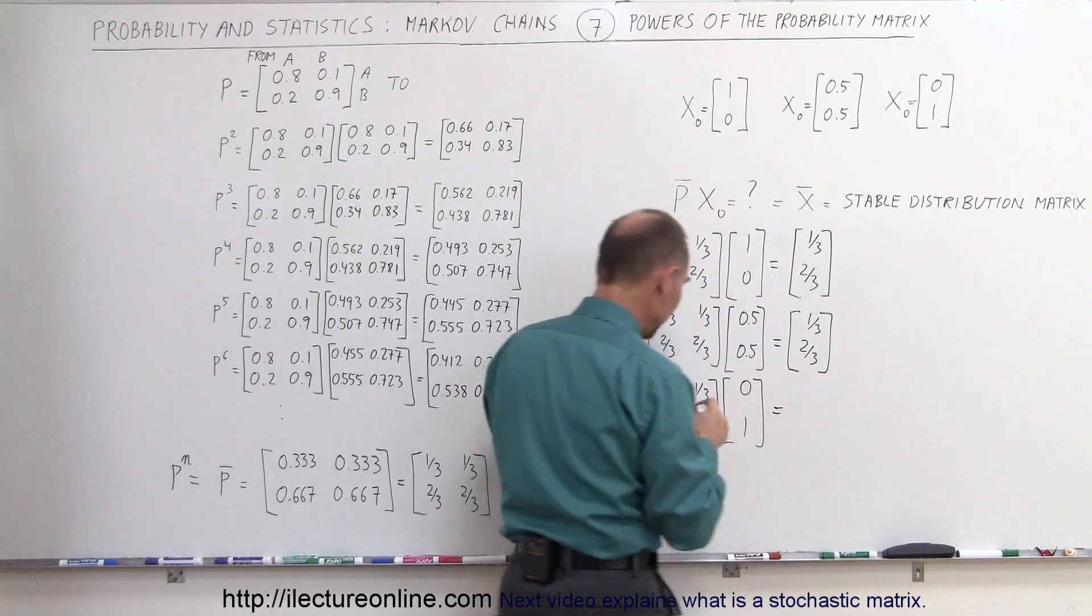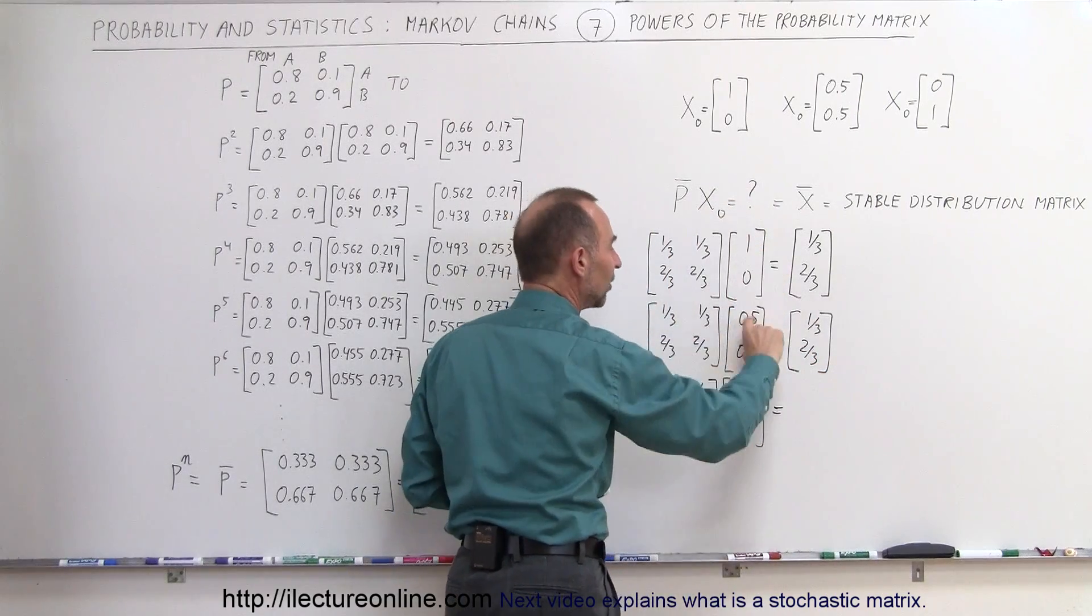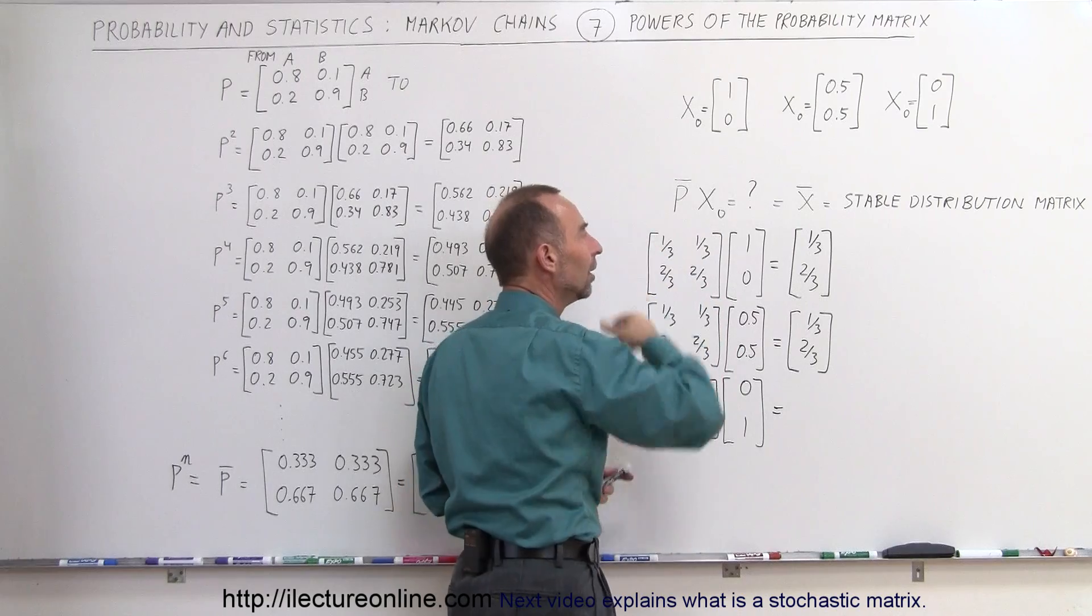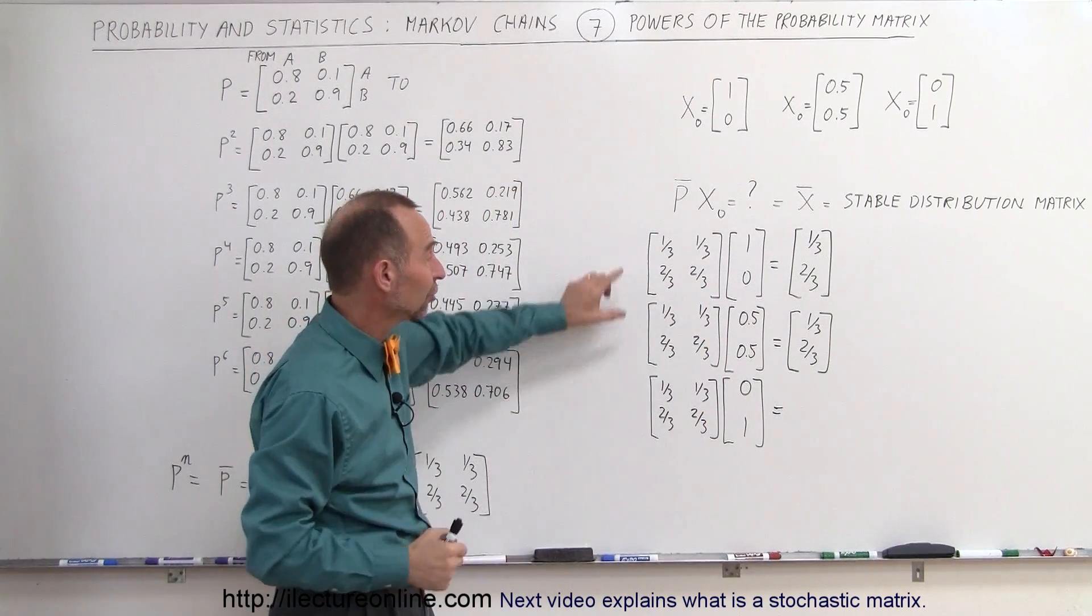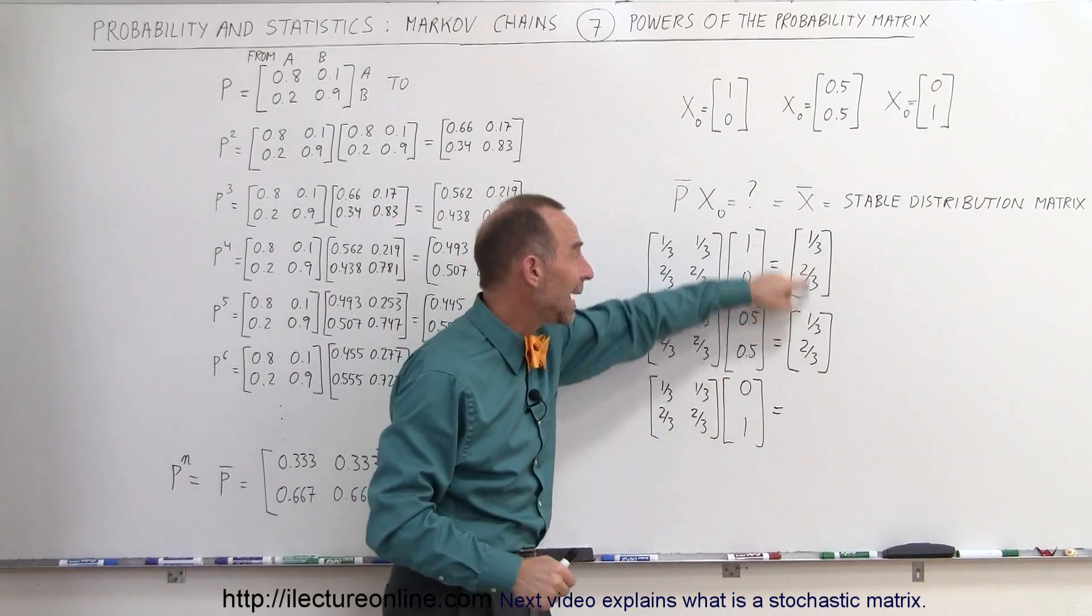So here we see that it didn't matter if we started in this state, or in this state, if we multiply that times the stable probability matrix, when we take P to the nth power, n being a very large number, we end up with the same end state.